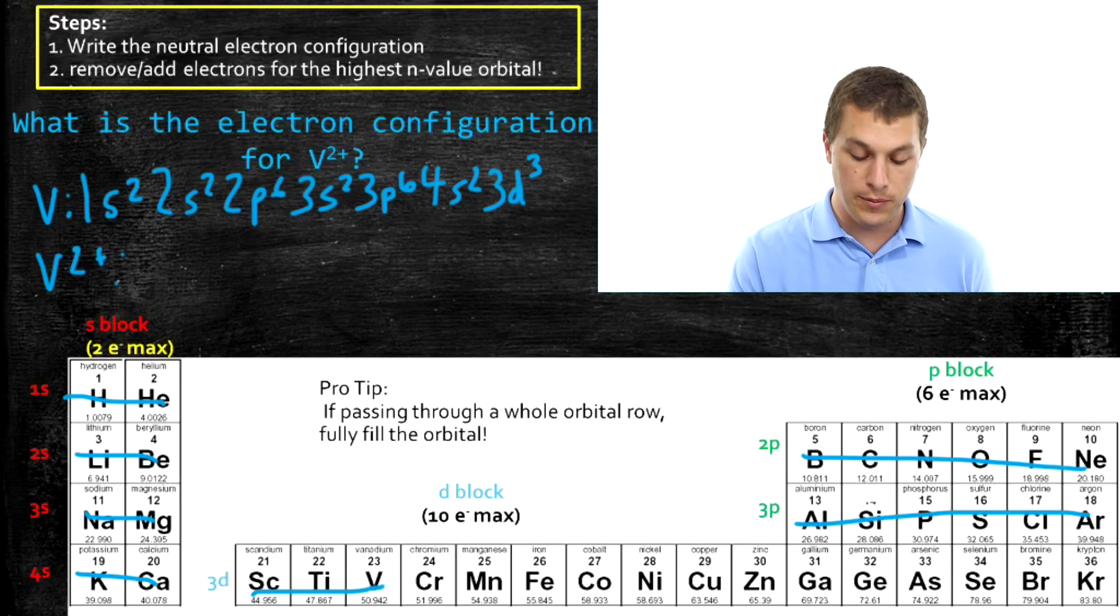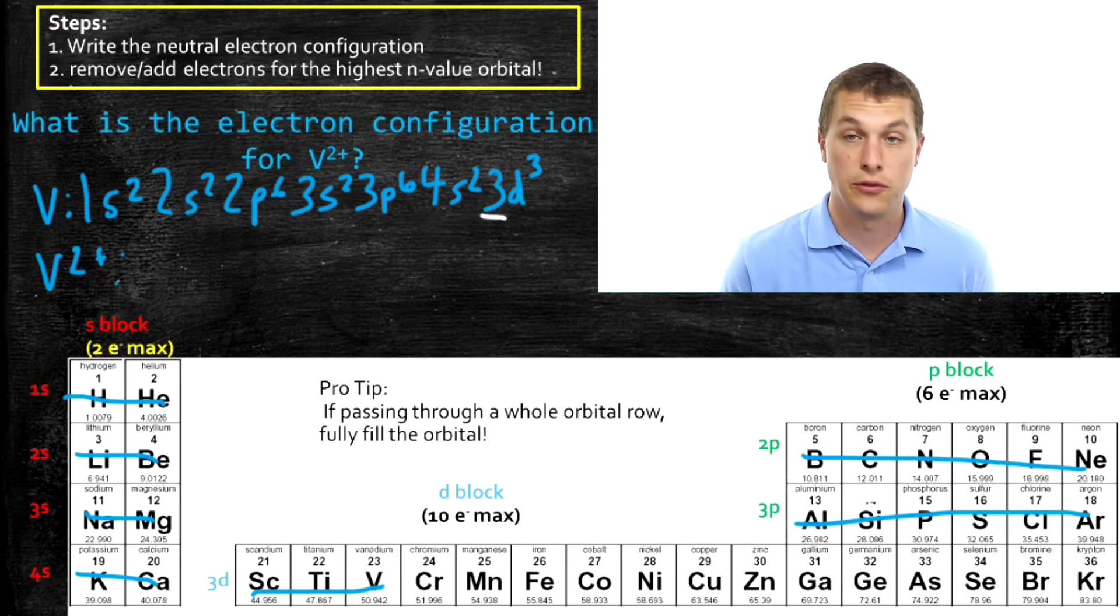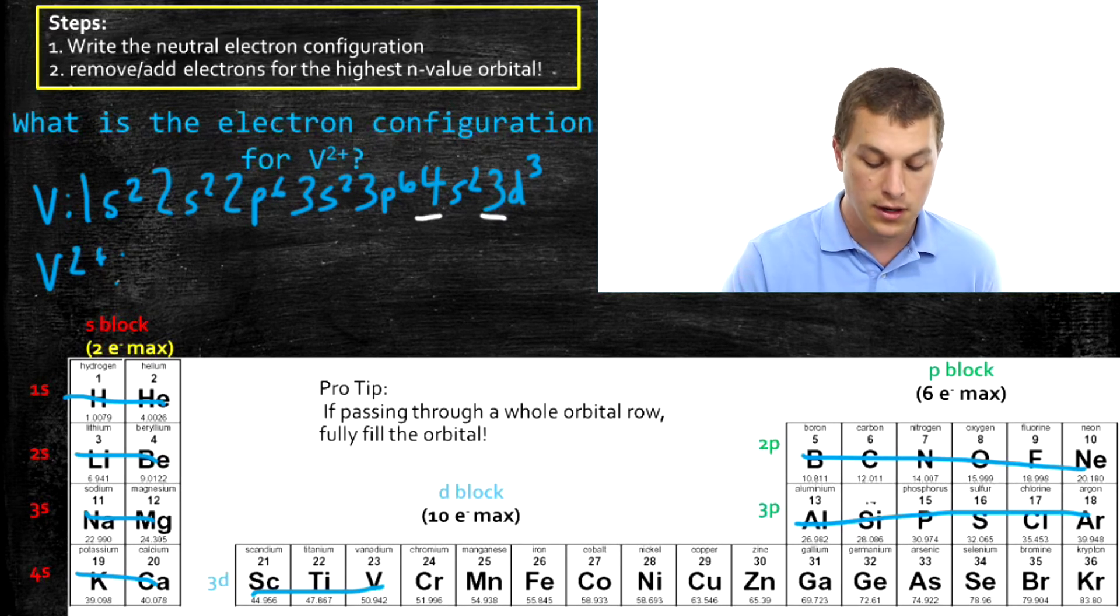Now, the D block is a little weird, because the D has an N value of 3, yet we write it after the 4S.